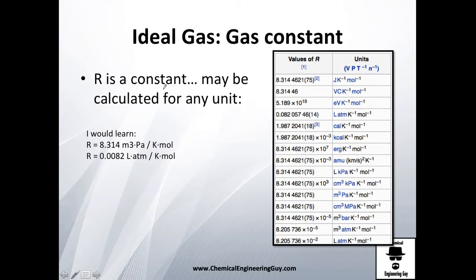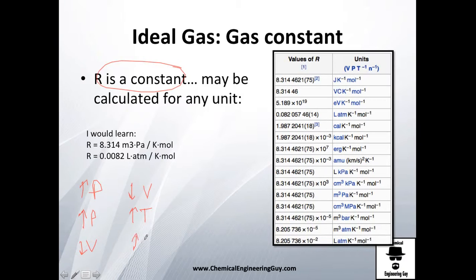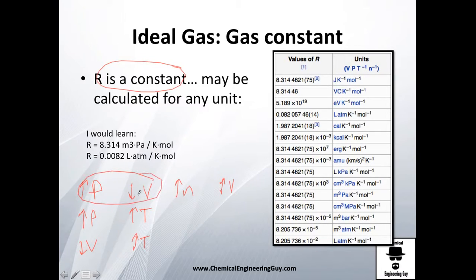About the gas constant R: historically, researchers observed that increasing pressure decreases volume, increasing pressure increases temperature, decreasing volume increases temperature, and increasing the amount of substance increases volume. These observations led to Boyle's Law and other gas laws relating pressure, volume, temperature, and amount of substance.